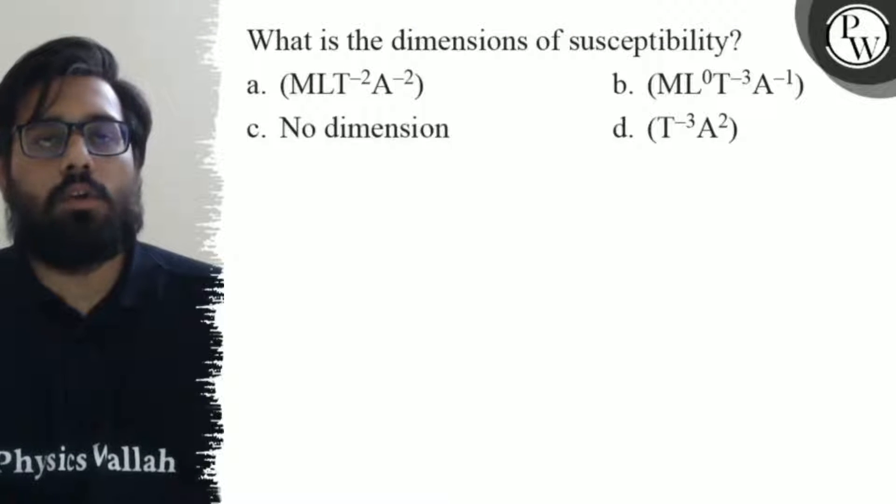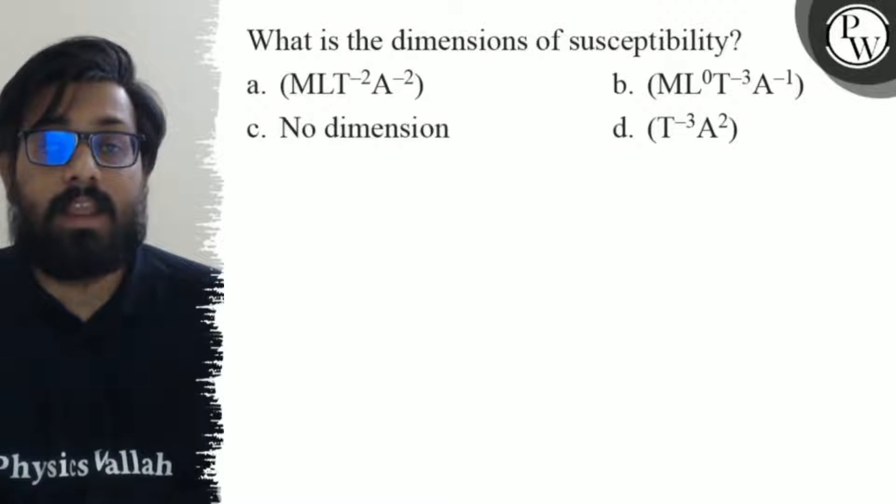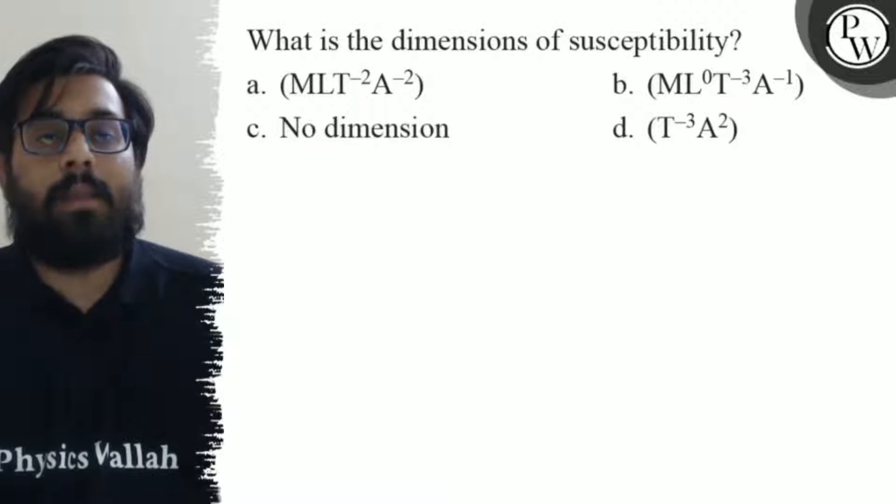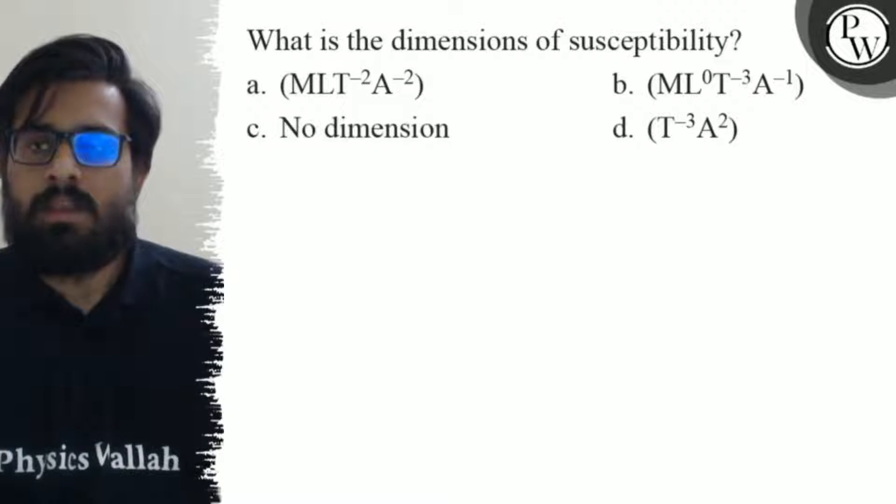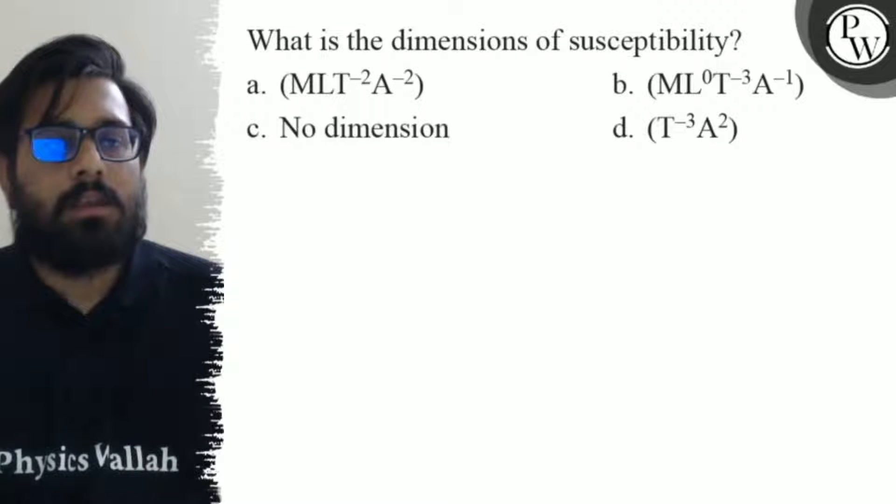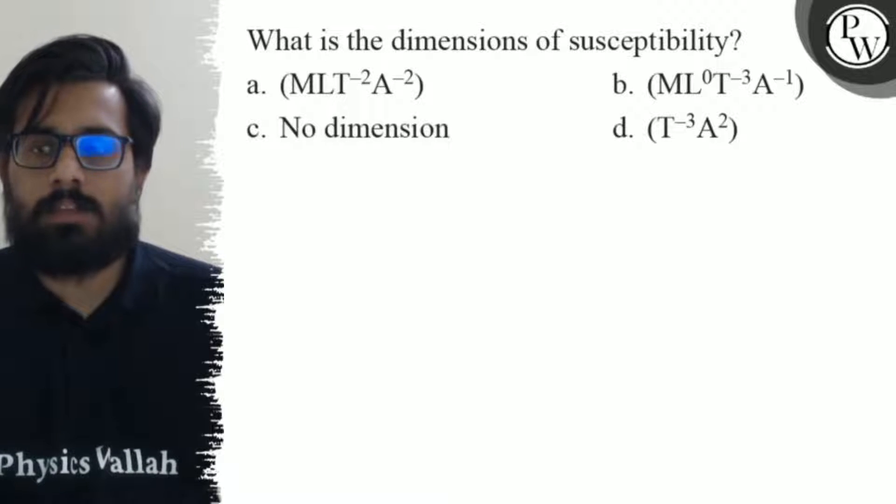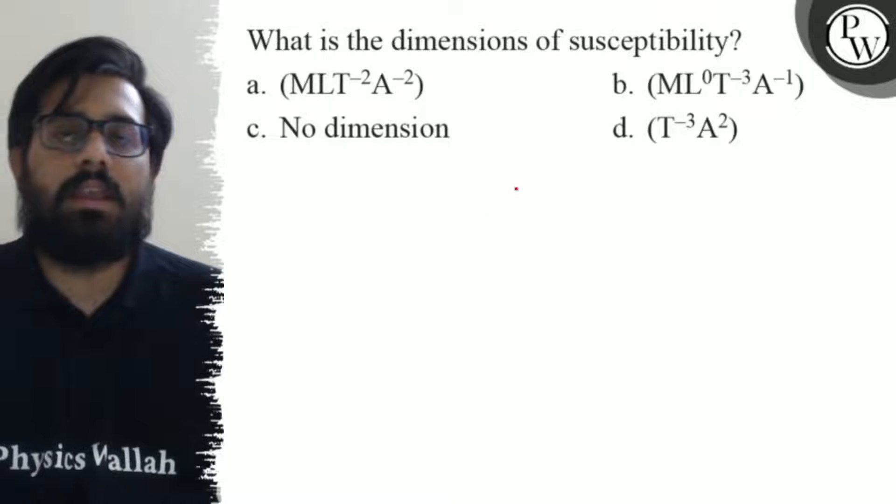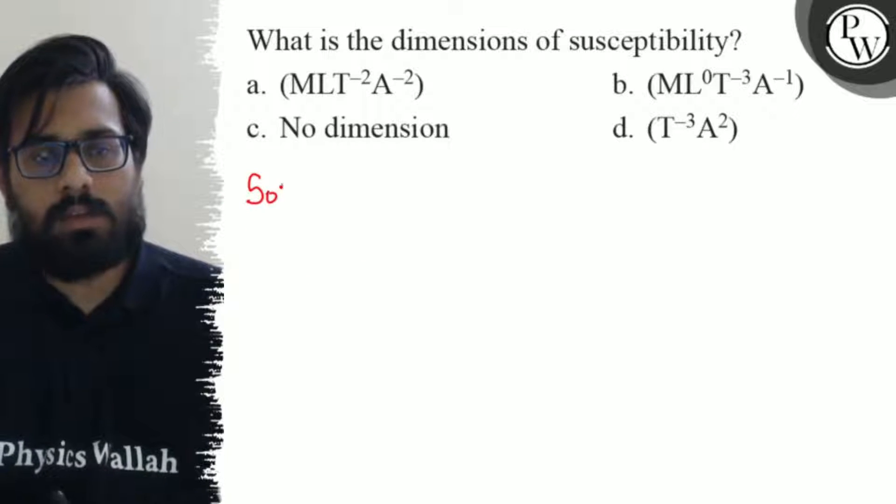Hello everyone, let's see the question: What is the dimension of susceptibility? The first option says MLT^-2A^-2, second option says ML^0T^-3A^-1, third option says no dimension, and the fourth option says T^-3A^2.